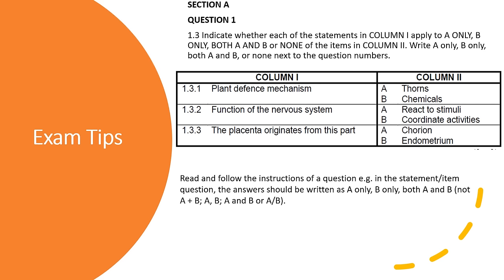Section A, question 1.3. The instruction reads: indicate whether each of the statements in column 1 applies to A only, B only, both A and B, or none of the items in column 2. Write A only, B only, both A and B, or none next to the question number. Here is an example — in column 1 we have the statement: plant defense mechanism. In column 2 we have two items: A thorns, B chemicals. Is thorns a plant defense mechanism? Yes, it is. Are chemicals plant defense mechanisms? Yes, they are. So both A and B applies to the statement. My correct answer would be both A and B.